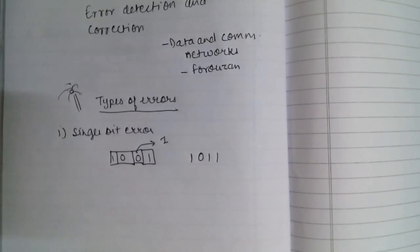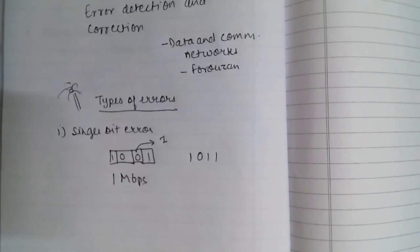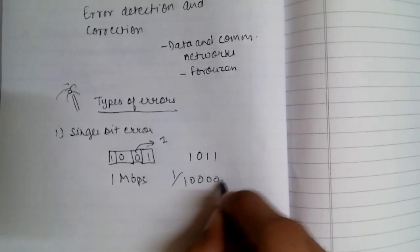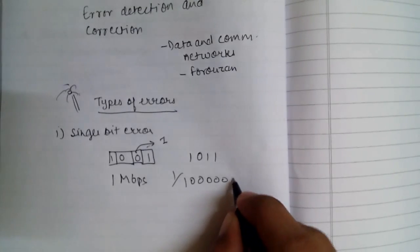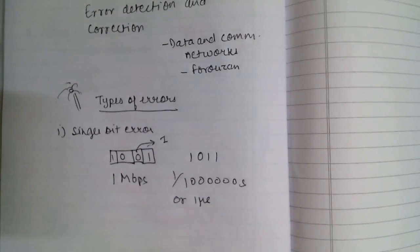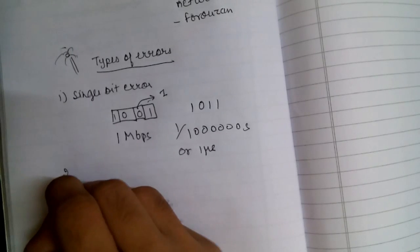Single bit errors are least likely to occur. If data is sent at 1 Mbps, each bit lasts only one microsecond — a very small time. The noise which interferes with data usually stays for a longer time, so affecting just one bit is rare, almost impossible.